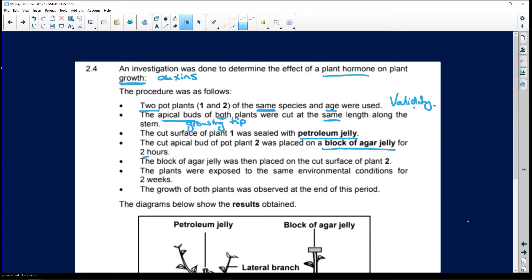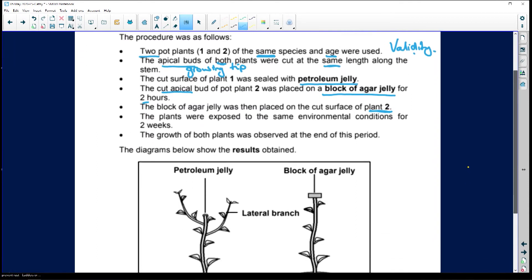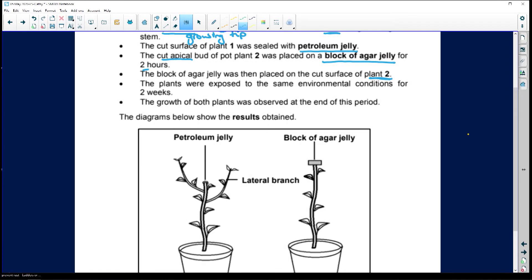The block of agar jelly was then placed on the surface of plant two. So you cut the end of plant two, the apical bud goes onto the agar jelly, and then you put the agar jelly back onto plant two. All the auxins from this apical bud go into the block of agar jelly, and now you have those auxins back into plant two.